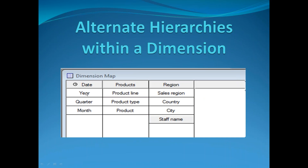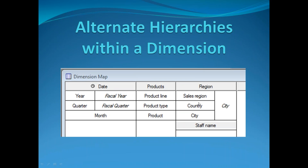Here you can see Date, Products, and Region — these are direct hierarchies. When you create an alternative hierarchy, Region is created with an alternate hierarchy of City. This is the primary hierarchy, and these alternate hierarchies are another way of selecting or drilling down the data. Similarly, Year, Quarter, and Month are the primary hierarchy, while the alternative hierarchy would be Fiscal Year, Fiscal Quarter, and Month.